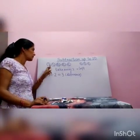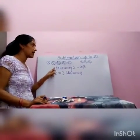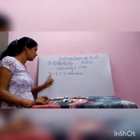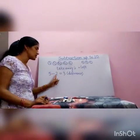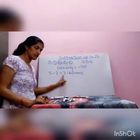The subtraction means to take away and find out what is left. Here from 5 balls, taken away 2, and 3 is left.